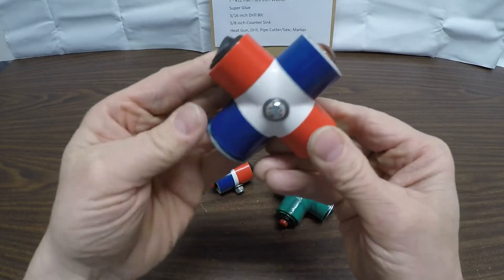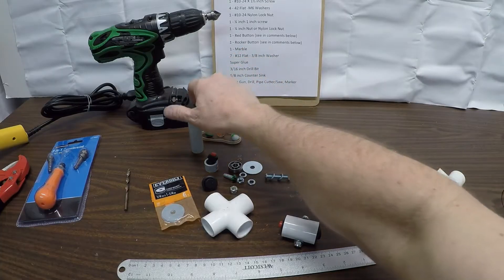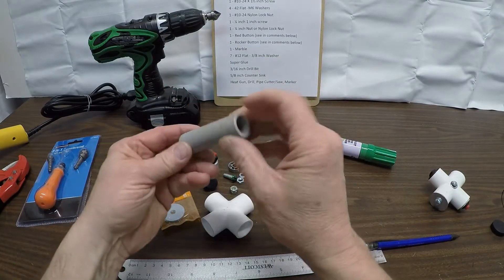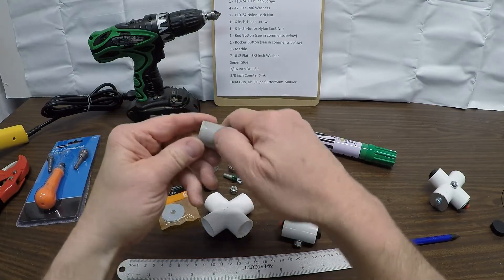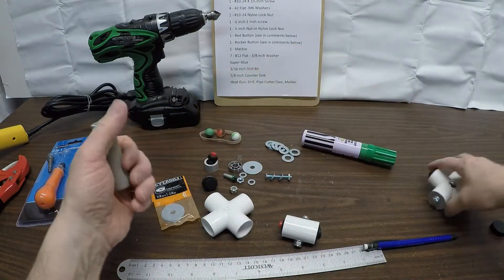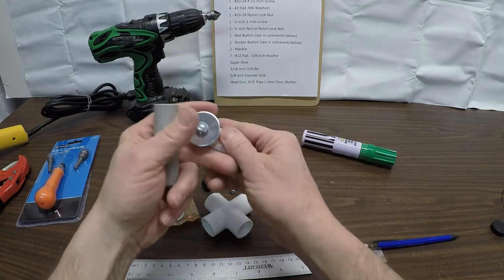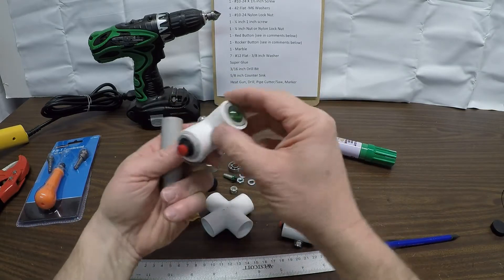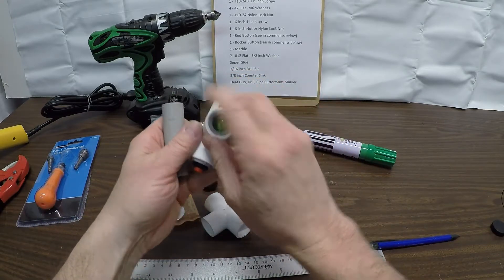Now let's get on with the build. You need some half-inch pipe, it can be scrap pipe. You're going to use two sections of this, one for the button and one for the trackball.